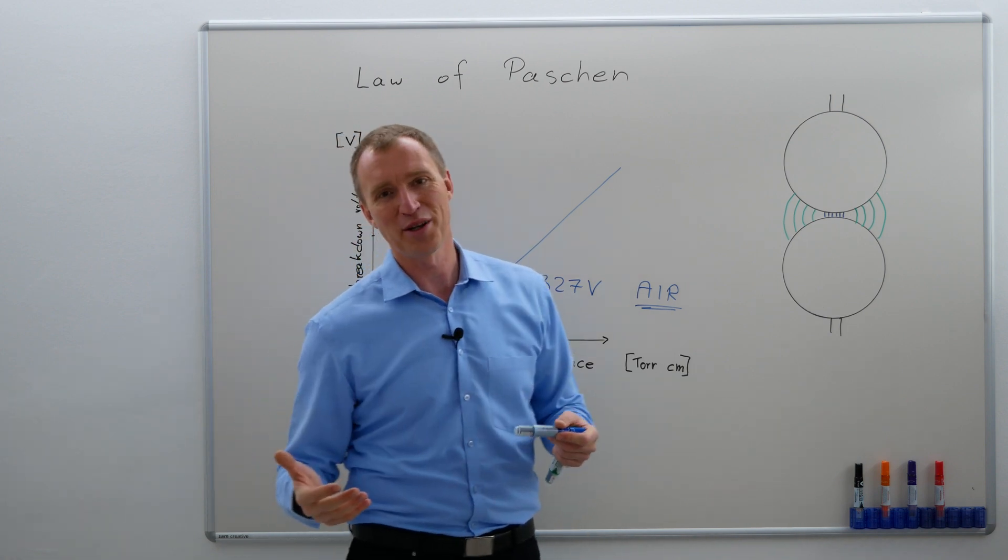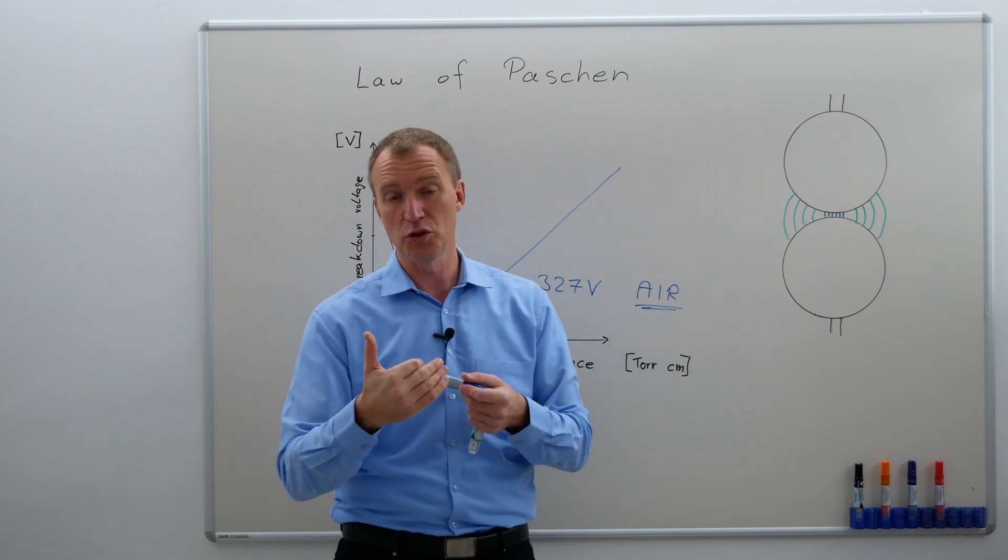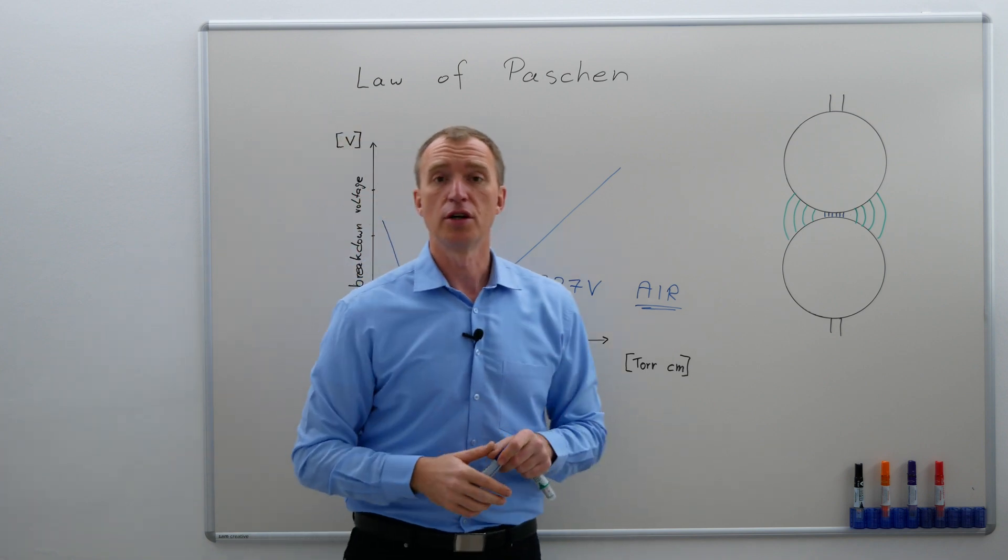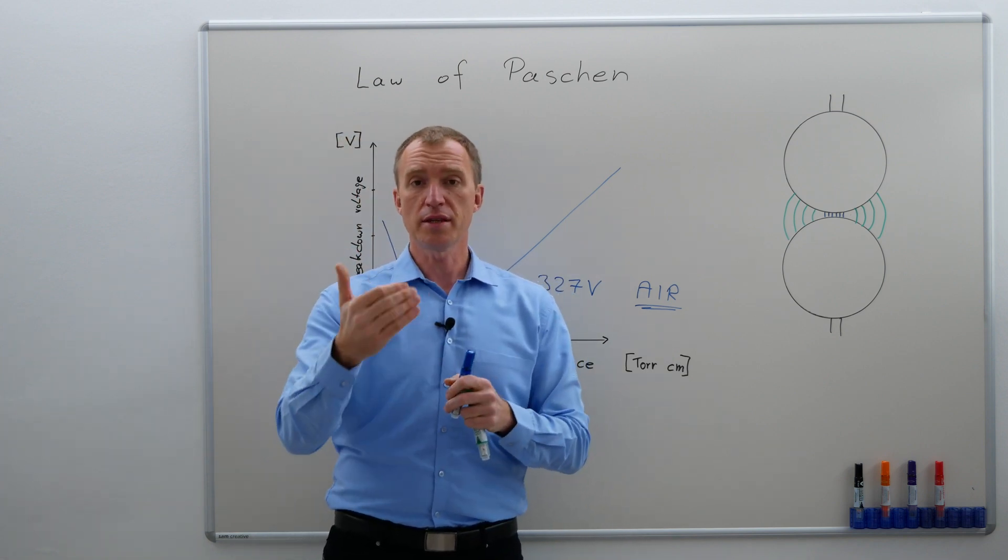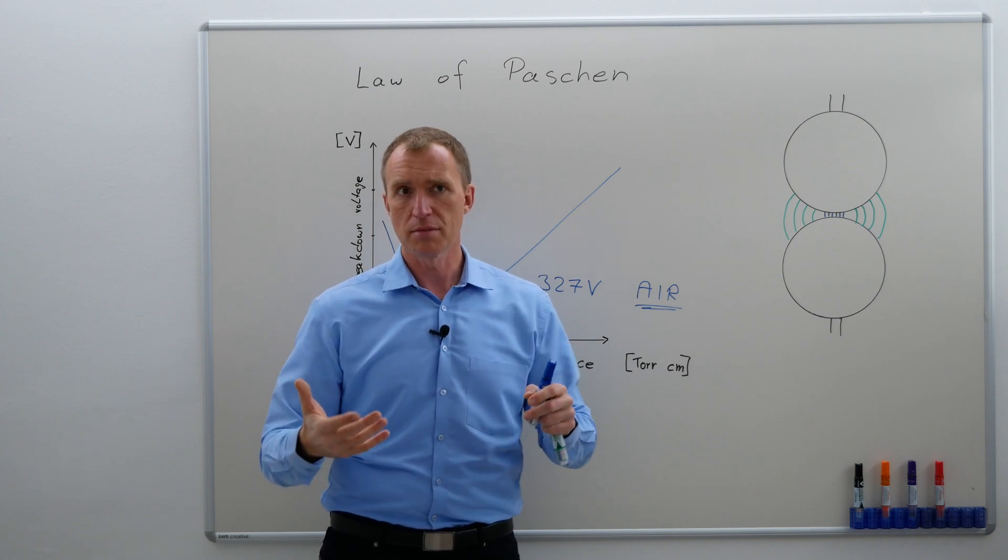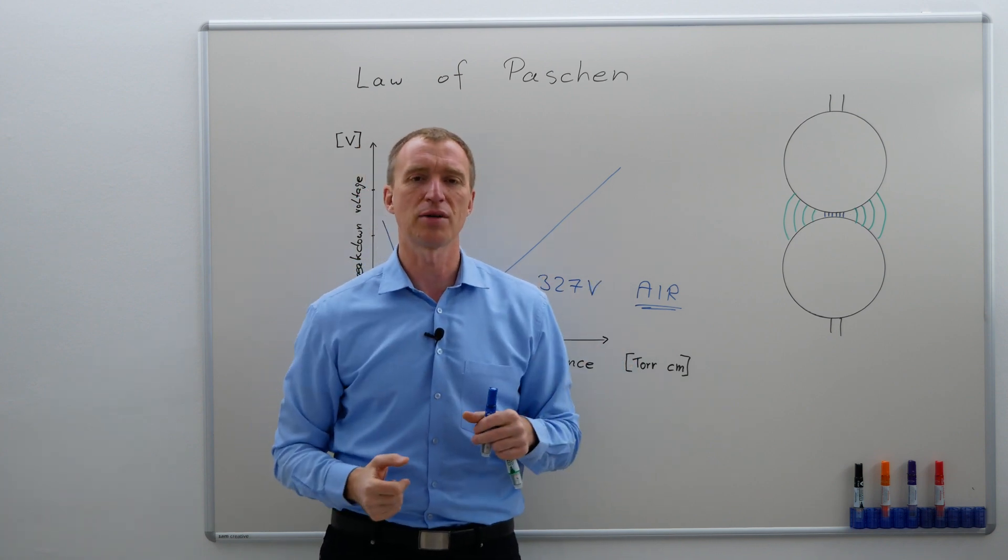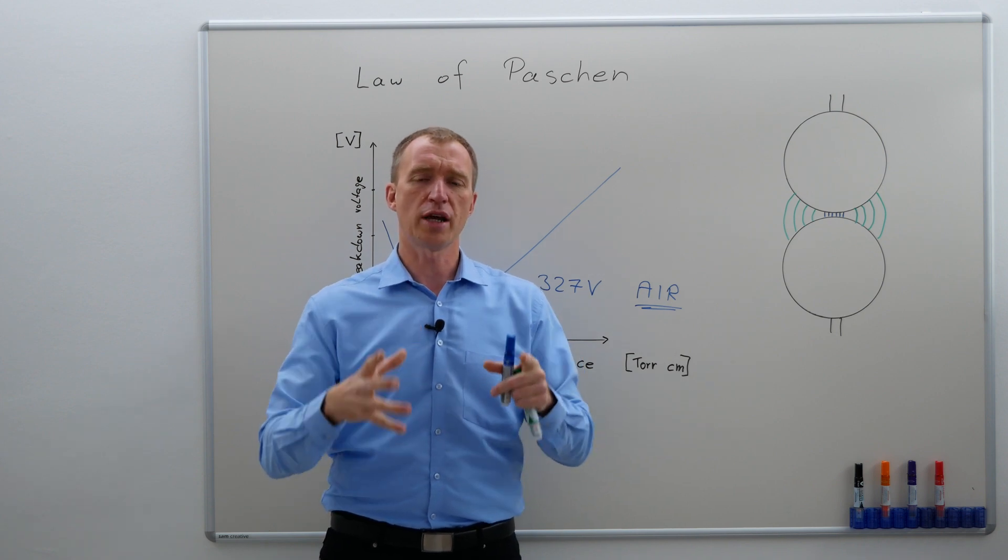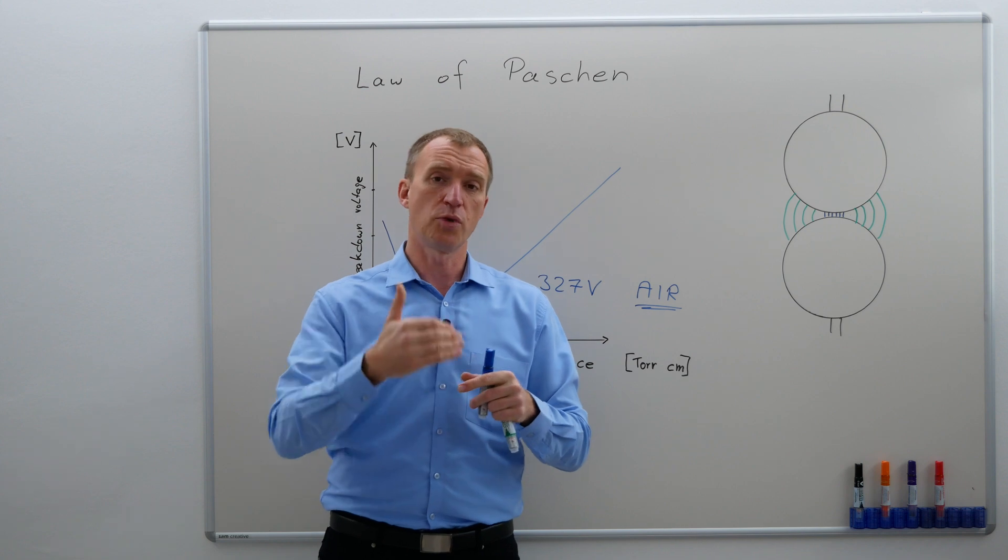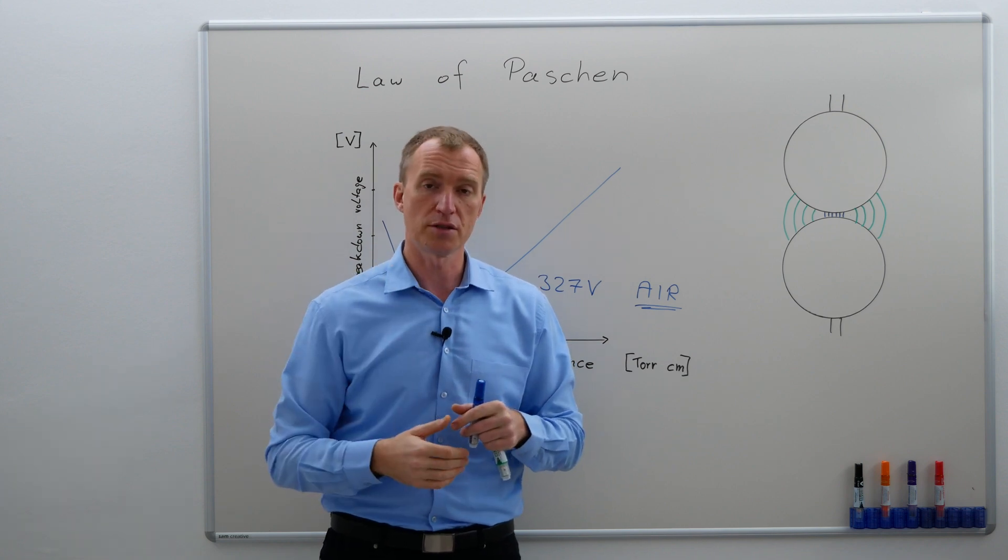Very often we don't have 7.5 micrometers in our world, especially not between two electrodes. Nevertheless, this helps us understand that changing the distance or changing the pressure will change the breakdown voltage, but it also changes the partial discharge inception voltage, meaning at what voltage level do we expect our first partial discharges.